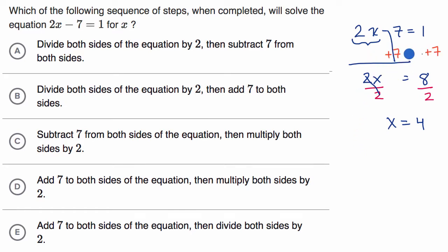First, we added seven to both sides. Let me write this down. So first, we added seven to both sides, both sides, and then the second step is we divided both sides by two. Divided both sides by two.